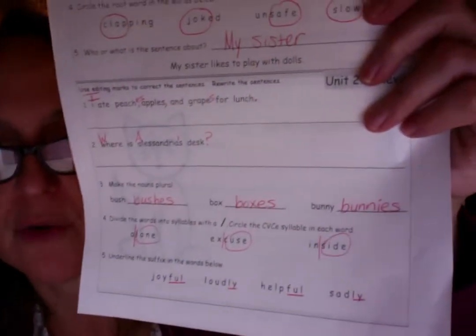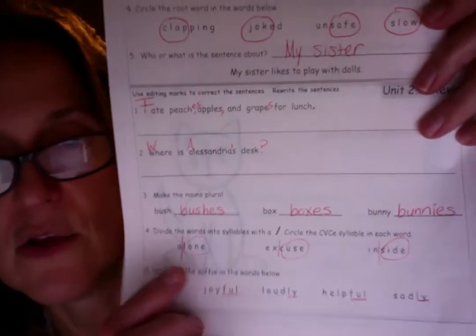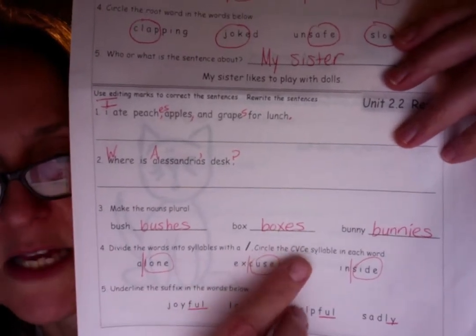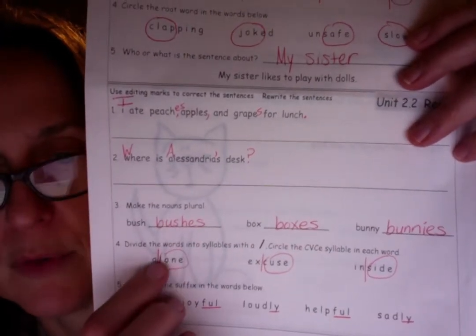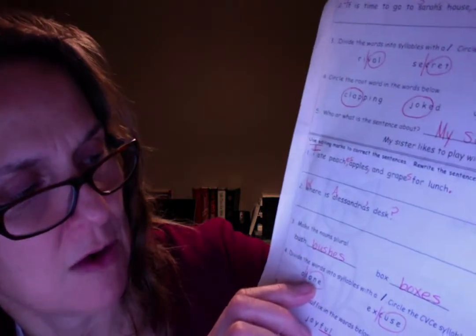Dividing the syllables. Alone. Excuse. Inside. And then you had to circle the C-V-C-E syllable. Okay. This would be L-O-N-E. Consonant vowel, consonant E.